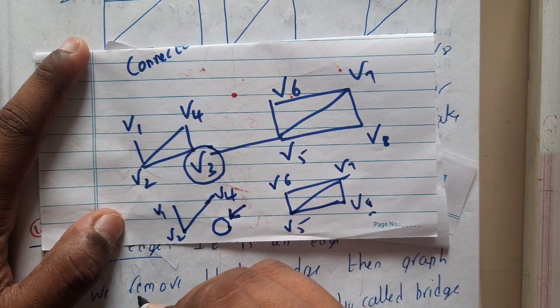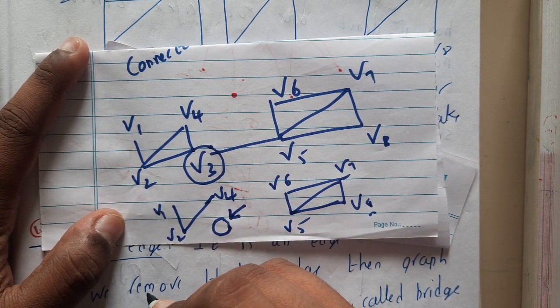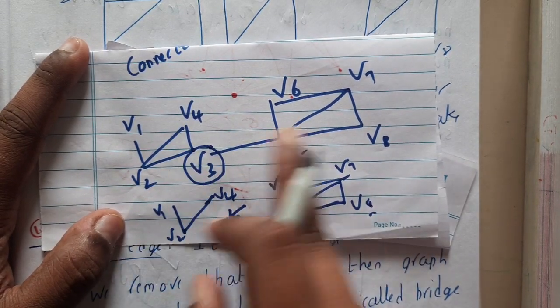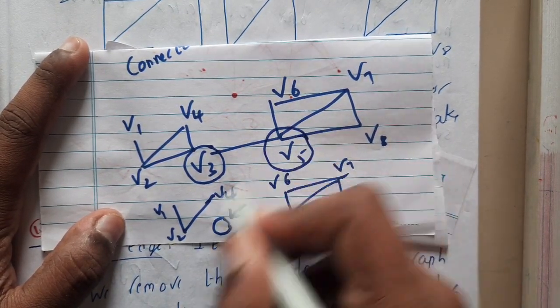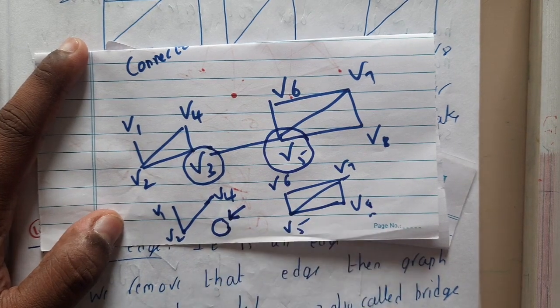So you can say that there are multiple cut vertices for a single graph. If you try removing this v5 also it becomes cut vertex. So in that way there is a chance of having multiple parts, also multiple cut vertices.